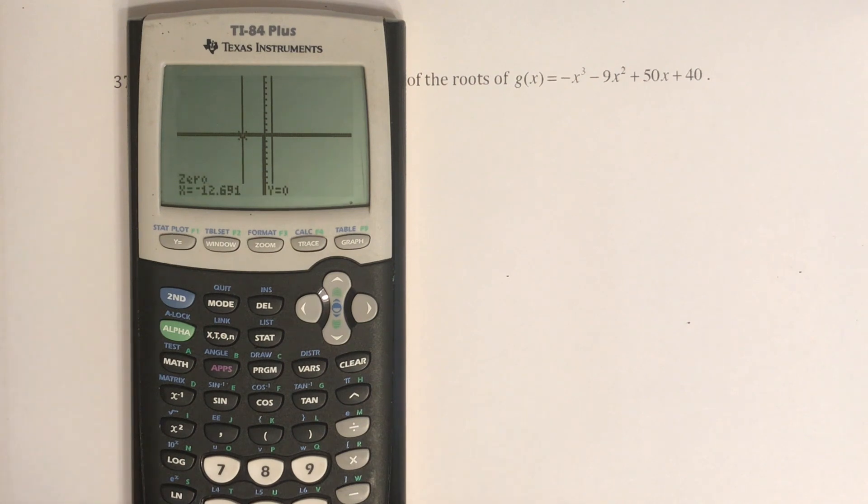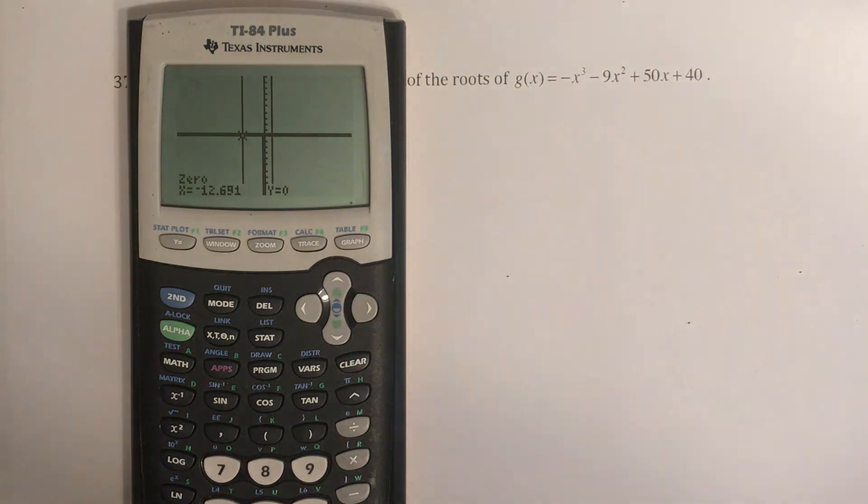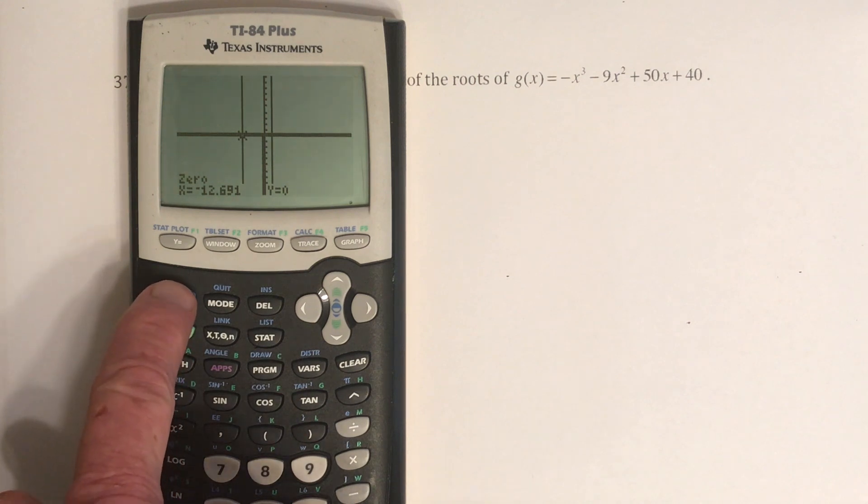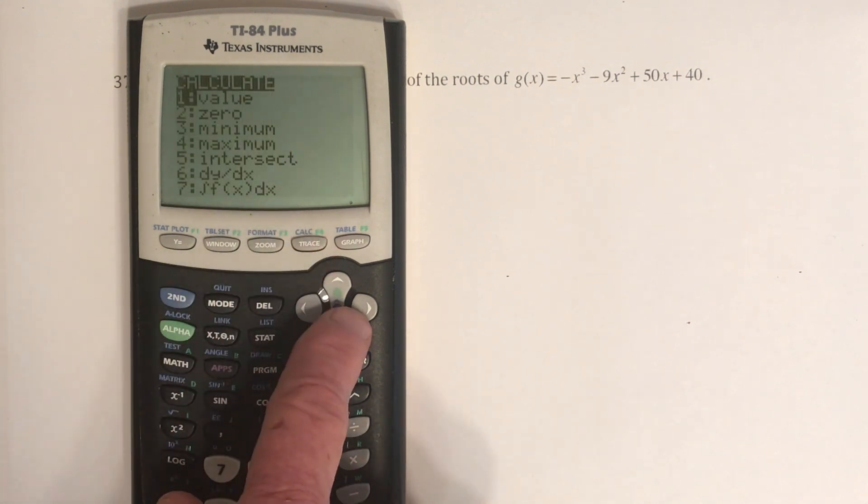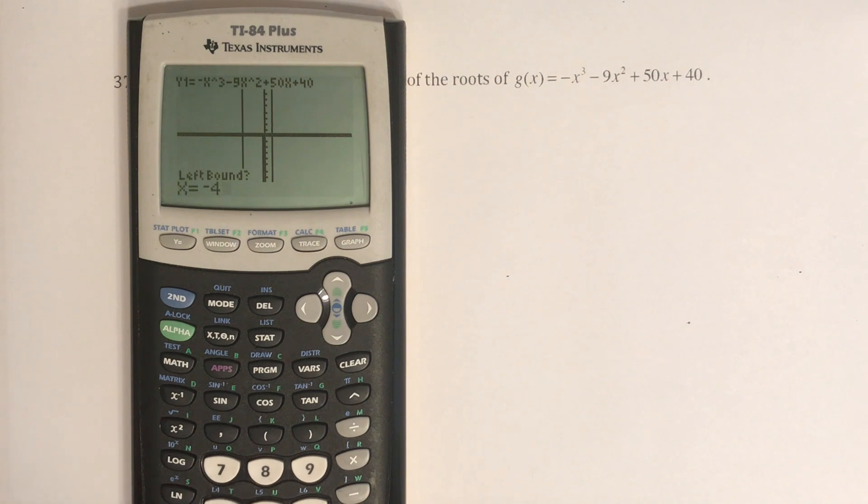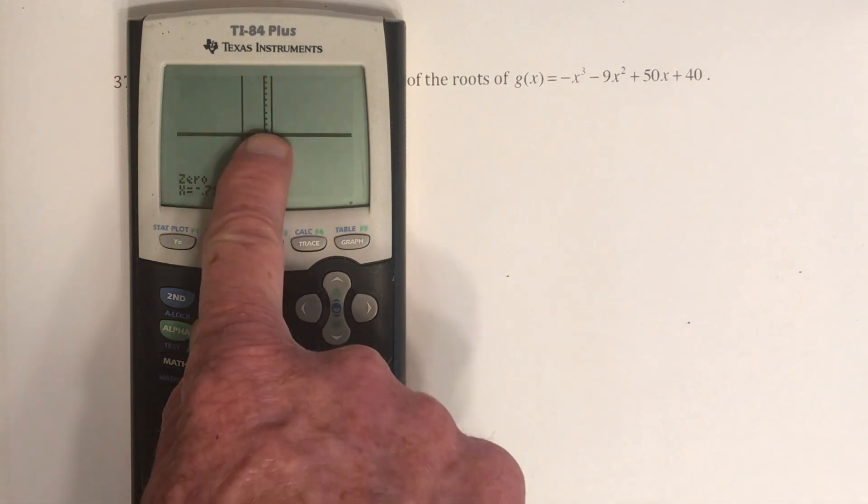And then it says that one answer is negative 12.691. So with the old-fashioned calculator, you would just repeat that and go, now I'm going to look for the 0 that's in the middle. That one looks like it's pretty close to 0. So I'm going to go from like negative 4 to a positive 1. And then my guess is 0. And then there's the second answer, negative 0.715. And then you would just repeat that for the third answer.